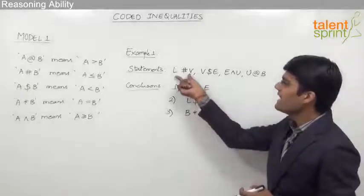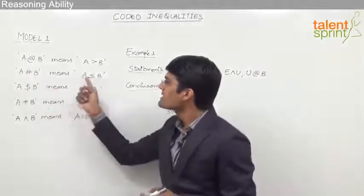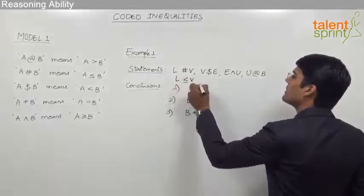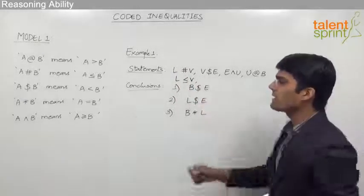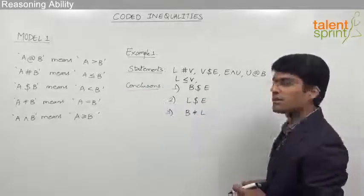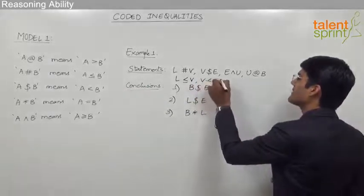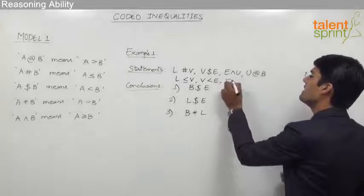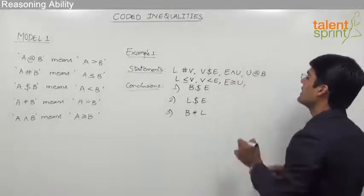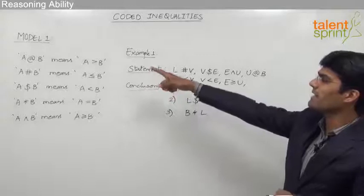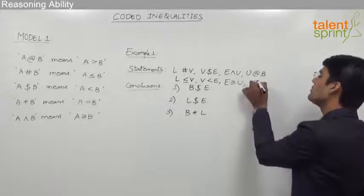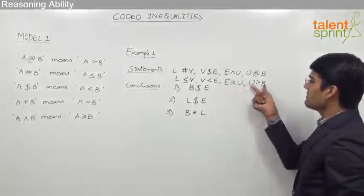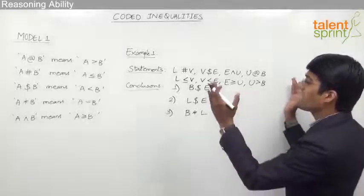L # V means L ≤ V. V $ E means V < E. E ^ U means E ≥ U. U @ B means U > B. Once we have replaced each symbol with the proper inequality, let us find the combined statement by joining all four parts into one equation.